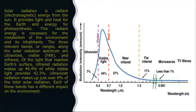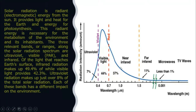The radiations which are very important for photosynthesis are in the range from 0.4 to 0.7 micrometers wavelength, or 400 to 700 nanometers. Later in the spectrum we have near infrared radiations, with wavelength from 0.7 micrometers to 1.5 micrometers.